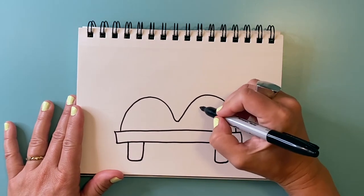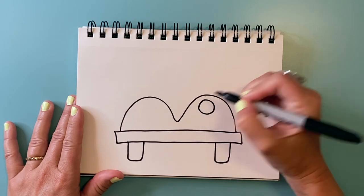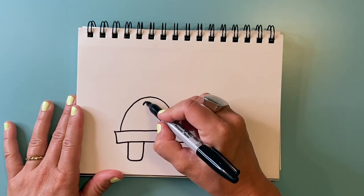And then we need some headlights. So two circles on each of those humps.